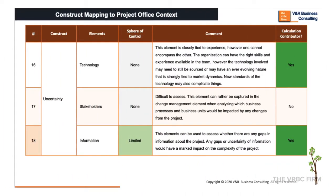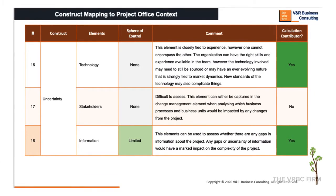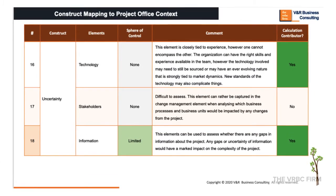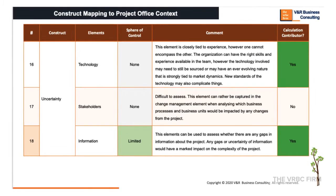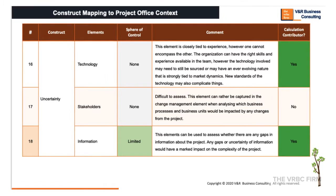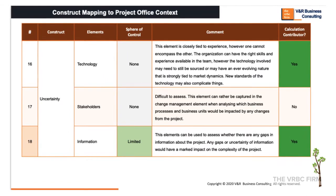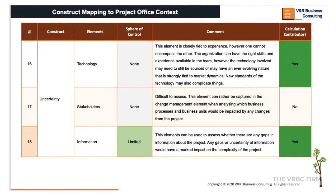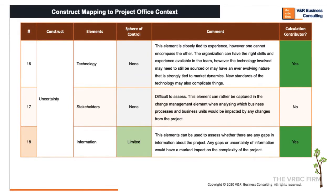It's often easy to pick up from project sponsors and owners how much information they are still uncertain about and the number of decisions outstanding in relation to the detailed requirements of the project. The result of this assessment should be included in the project complexity calculation, as the uncertainty indicates the possibility of scope and high-level requirement changes that may have a material impact on the success of the project.